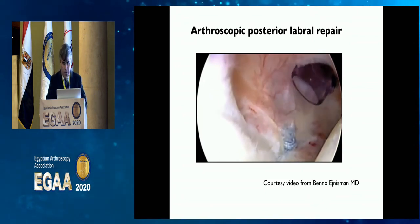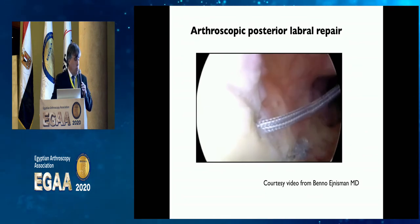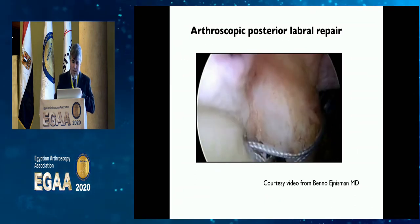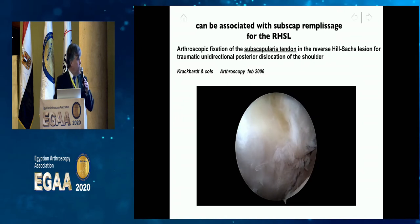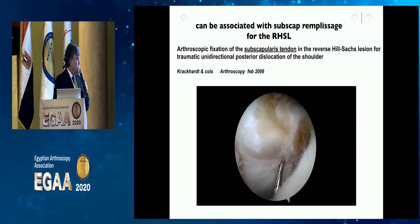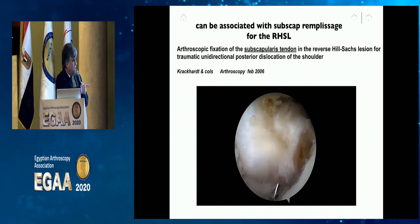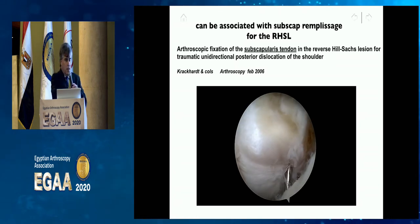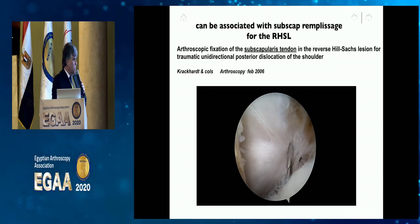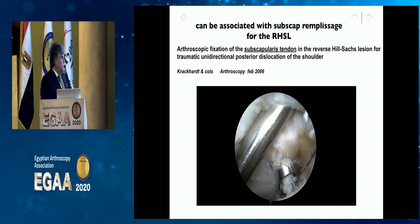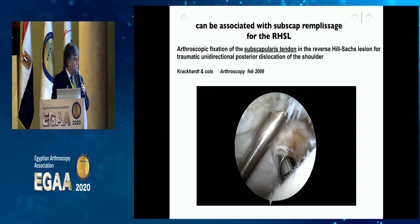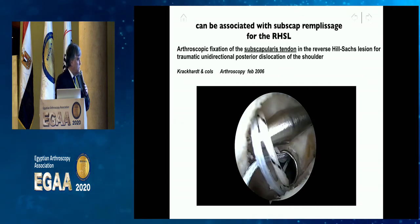A video from my colleague Benno Zemann from Brazil shows posterior labrum repair in beach chair position — a standard procedure. Remember it can be associated with a remplissage for the reverse Hill-Sachs lesion. A cadaveric demonstration from Naples, Florida shows fixation with a corkscrew FT and SwiftLock anchor performing an anterior remplissage — covering the Hill-Sachs lesion with the subscapularis.